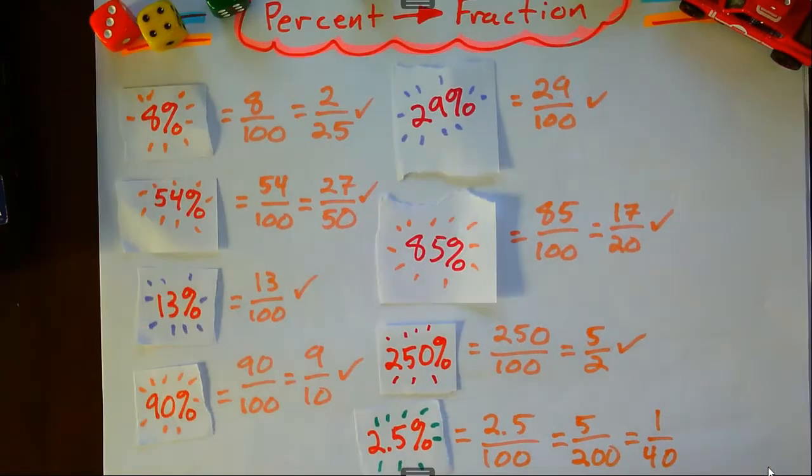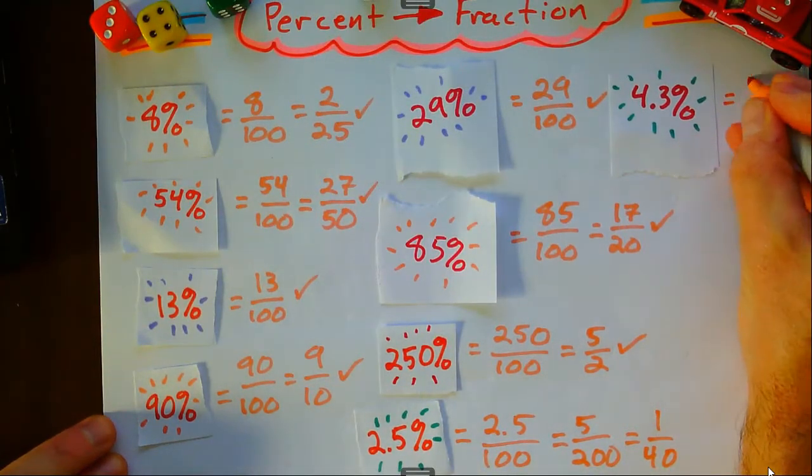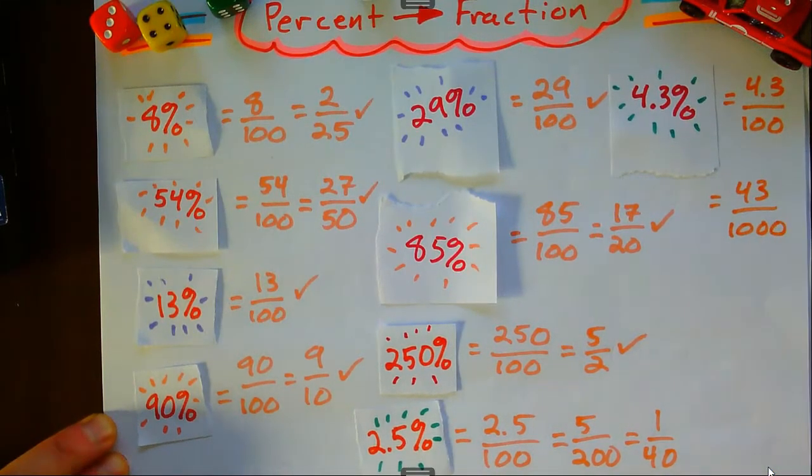4.3 out of 100. I'm going to multiply the top and bottom by 10 and get 43 over 1000.